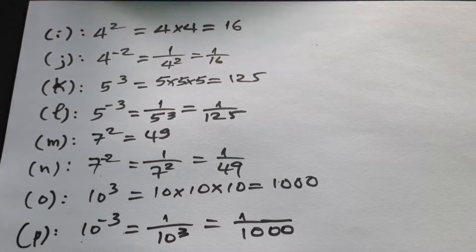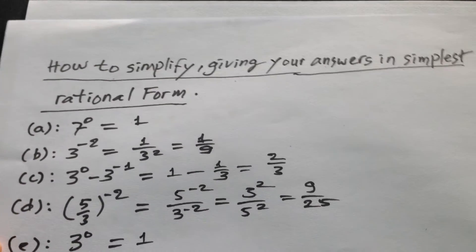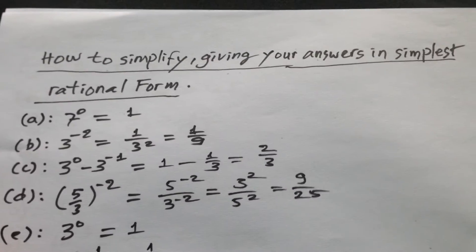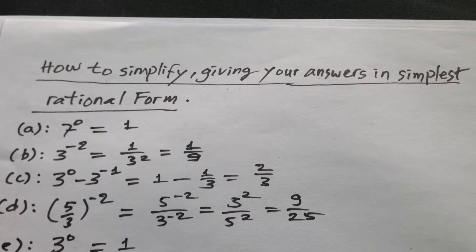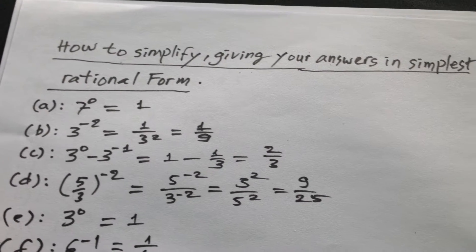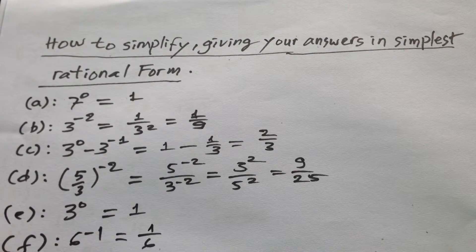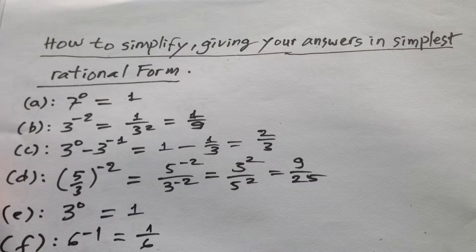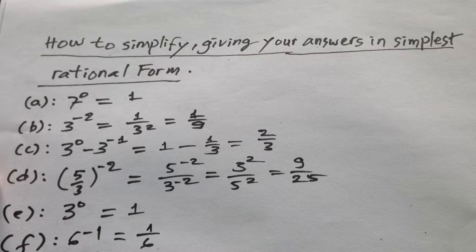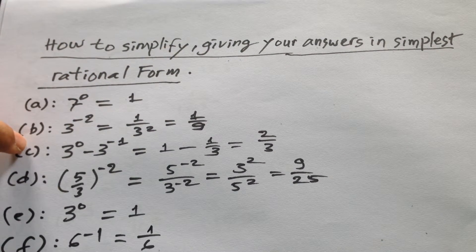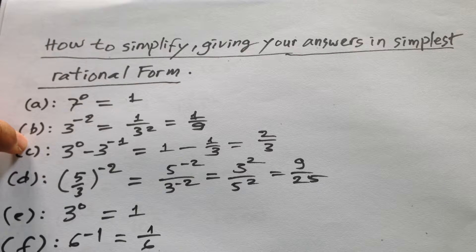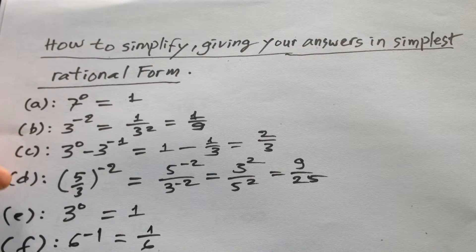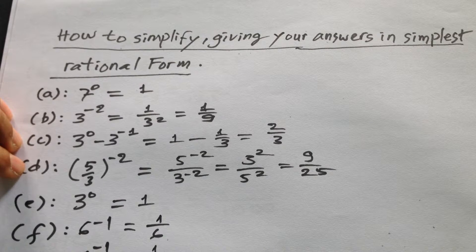We have the formula like this — we know we can simplify it. To review our calculation: how to simplify giving your answers using simplest rational form. n to the power 0 equals 1. 3 to the power minus 2 equals 1 divided by 3 to the power 2, equal to 1 divided by 9. 3 to the power 0 minus 3 to the power minus 1 equals 1 minus 1 divided by 3, equal to 2 divided by 3. And for 5 divided by 3 to the power minus 2, equal to 5 to the power 2 divided by 3 to the power 2.